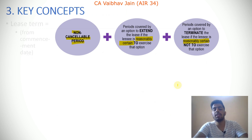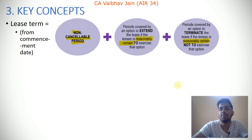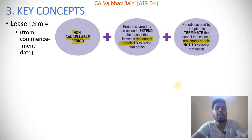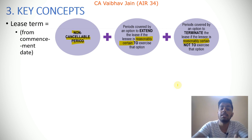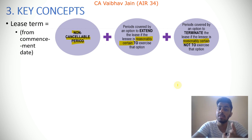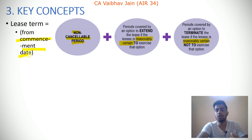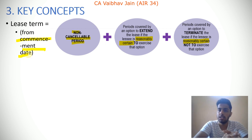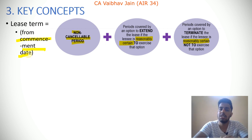Key concepts — Lease Term: the lease term includes three periods. First, the non-cancellable period. Second, the period for which the lessee is reasonably certain to exercise an option to extend. Third, the period for which the lessee is reasonably certain not to exercise an option to terminate. The lease term is counted from the commencement date, not the inception date. The importance of lease term links back to short-term leases: if the lease term does not exceed 12 months, the recognition exemption can be availed.